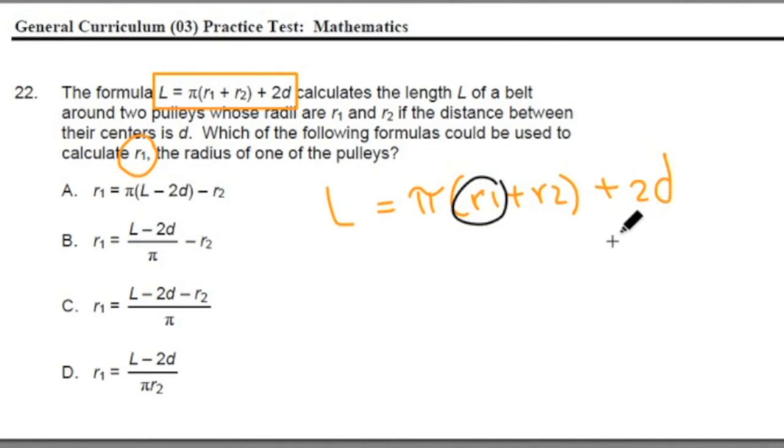The first step, trying to isolate the r1 because that's what we're trying to solve for, the length of one of the pulleys. We're going to minus 2d on both sides. And let's rewrite it as L minus 2d equals pi times the quantity of r1 plus r2. These cancel each other out.